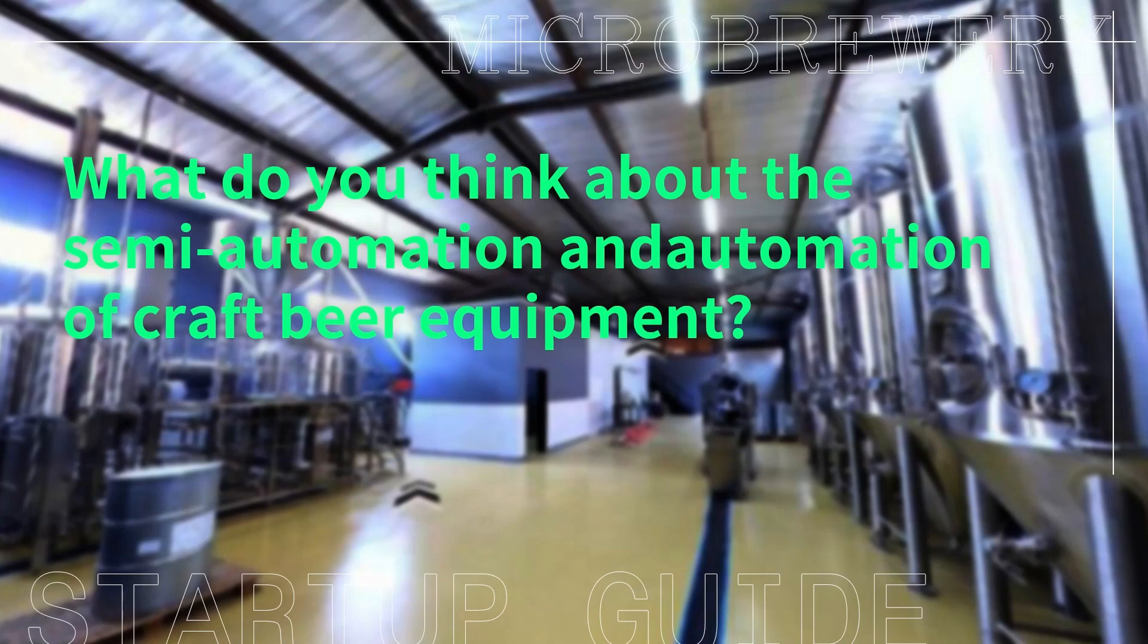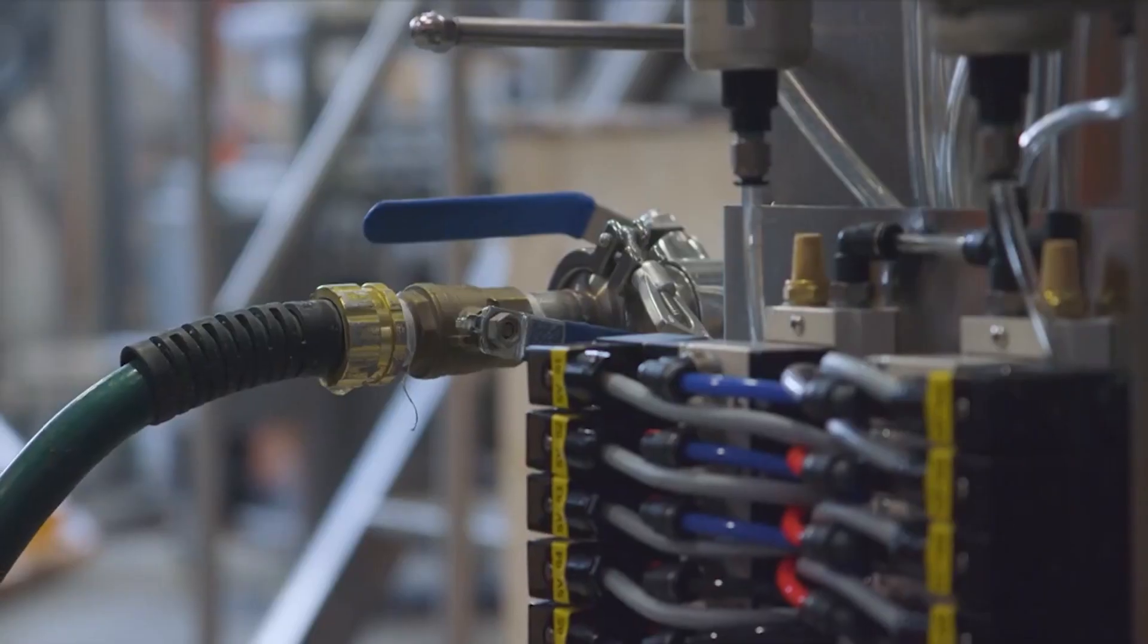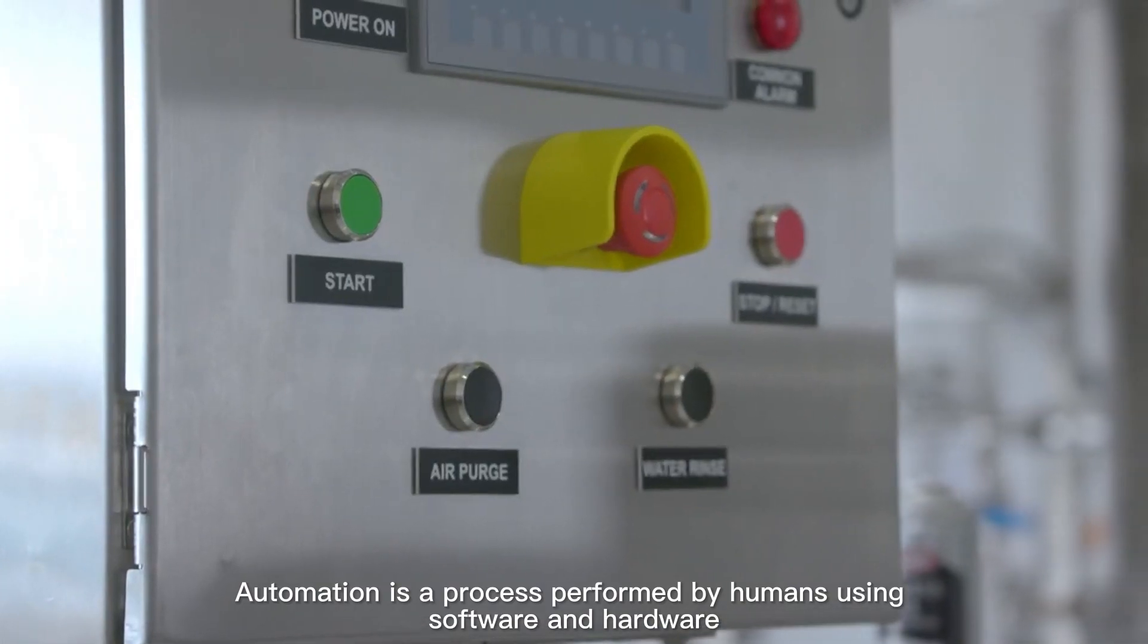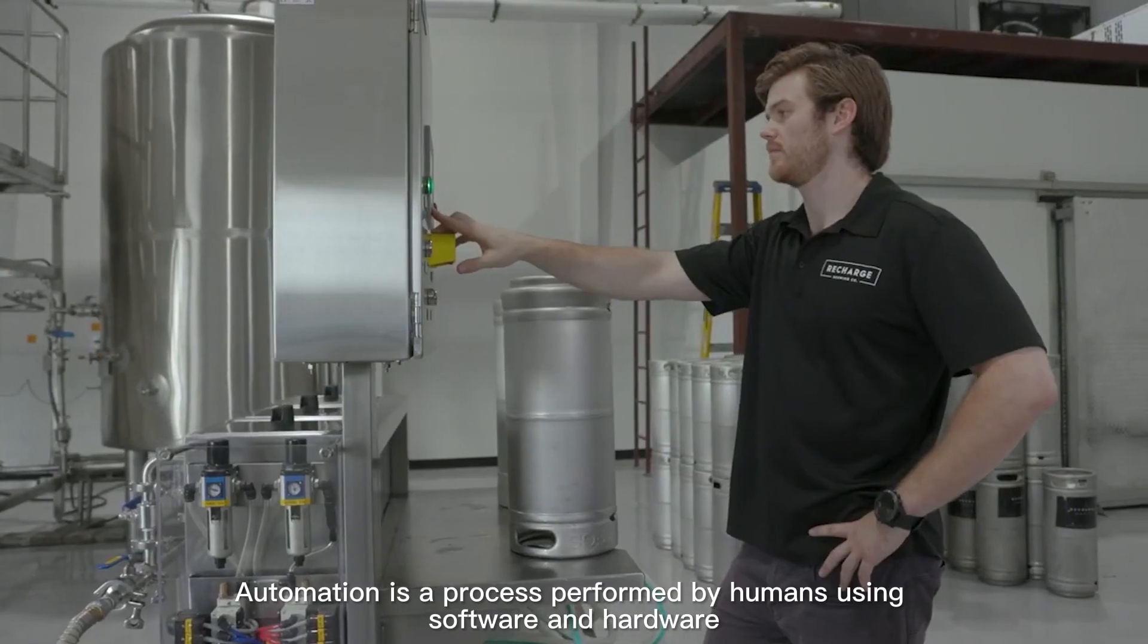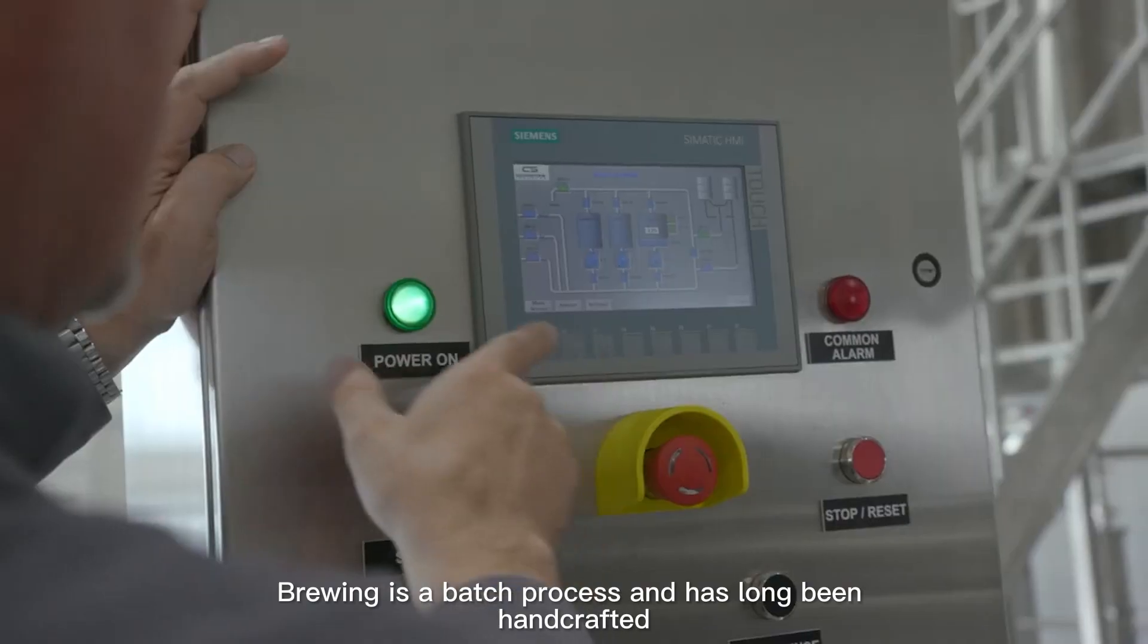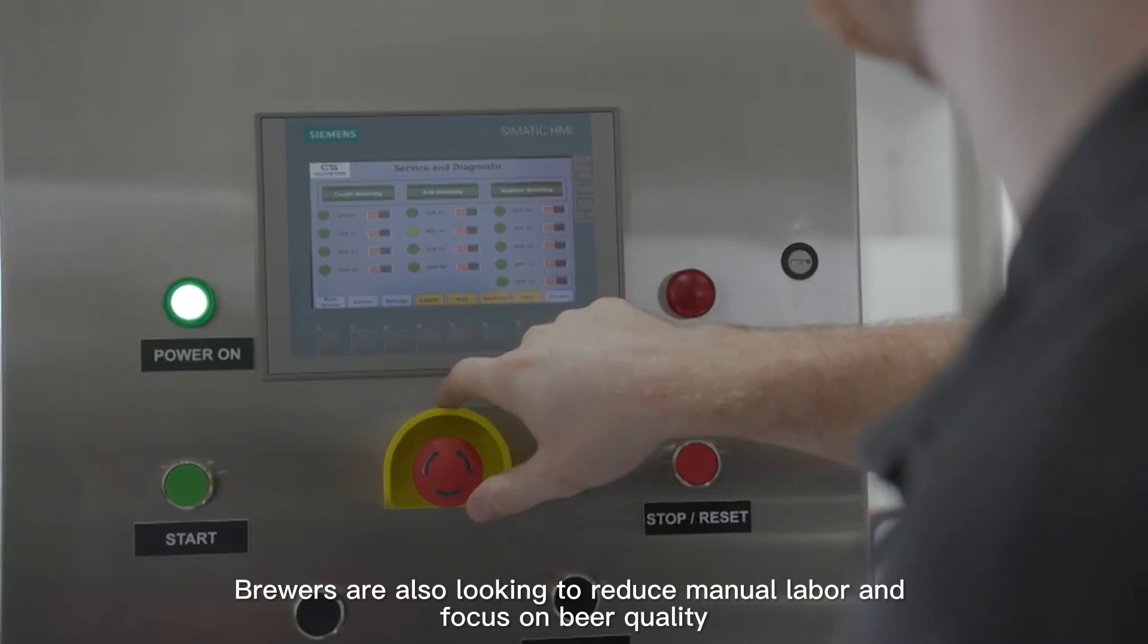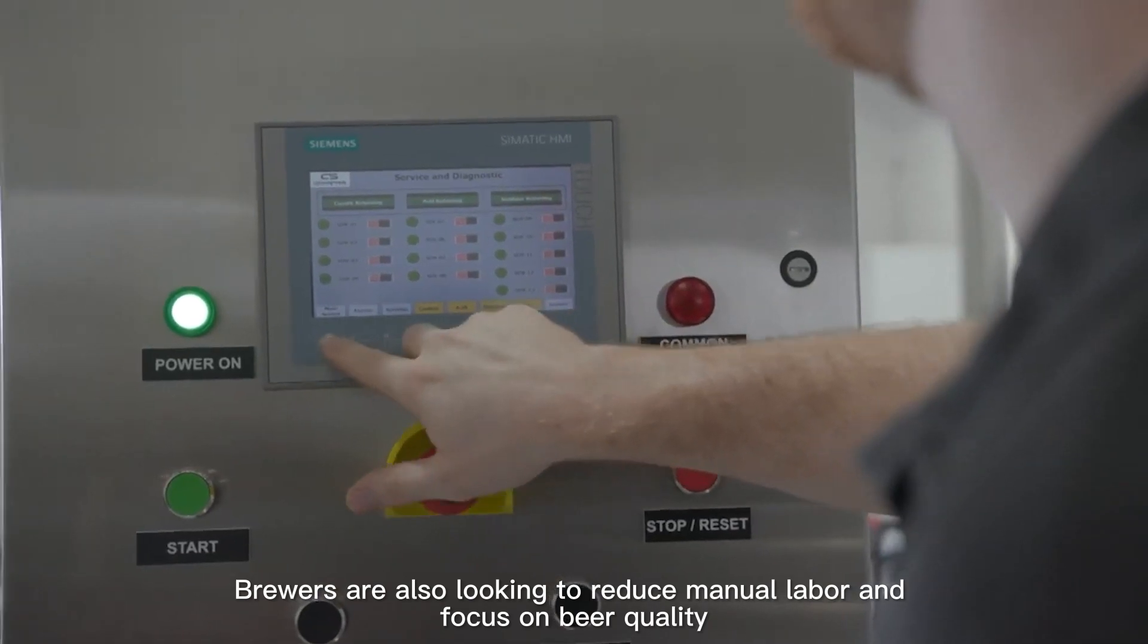What do you think about the semi-automation and automation of craft beer equipment? Automation is a process performed by humans using software and hardware. Brewing is a batch process and has long been handcrafted. Brewers are also looking to reduce manual labor and focus on beer quality.